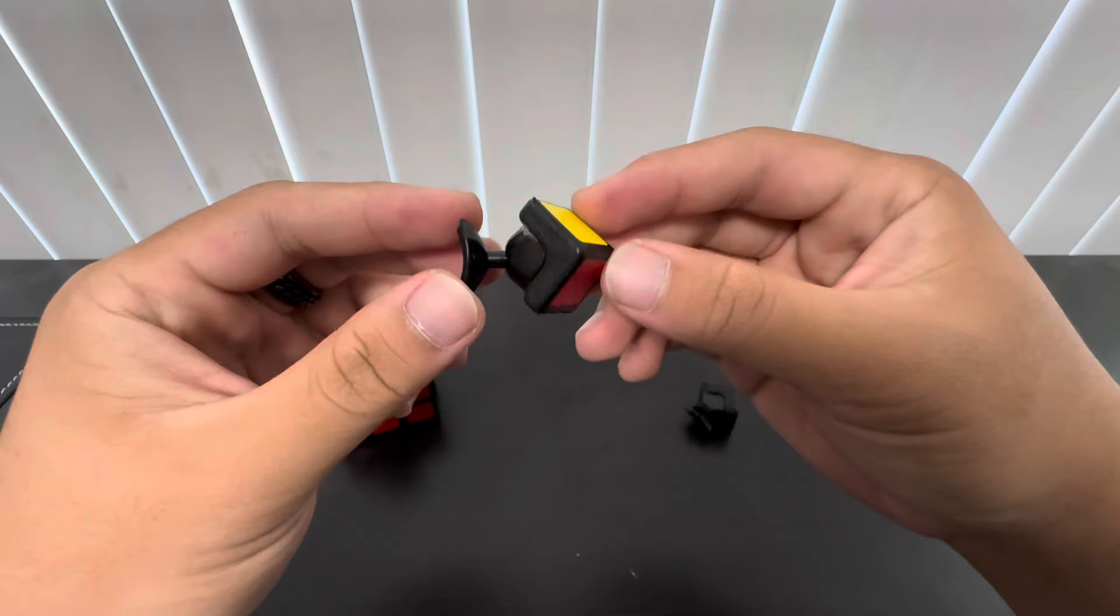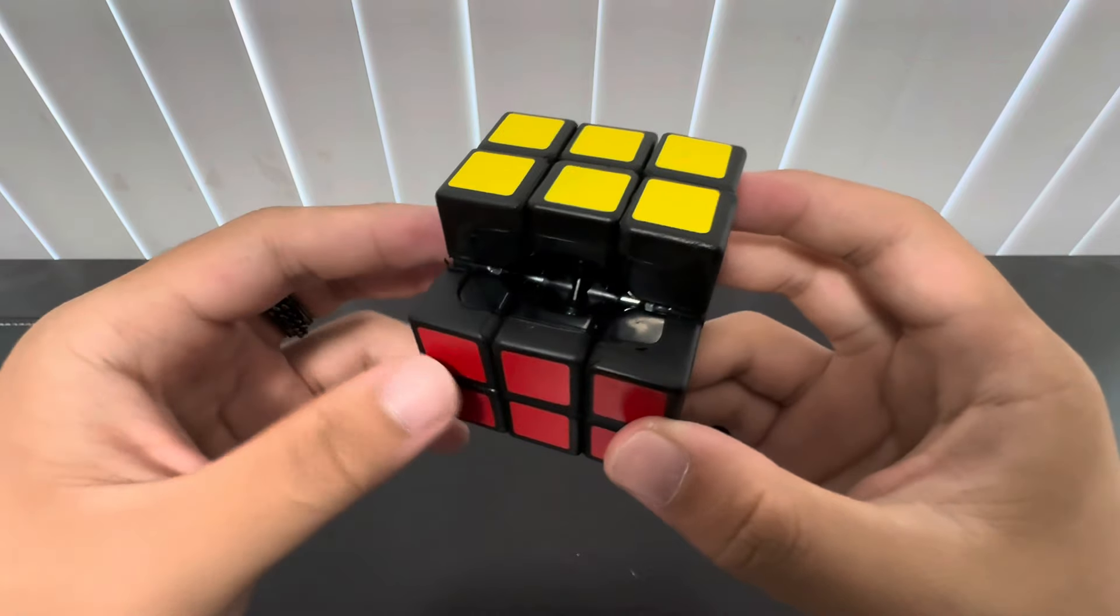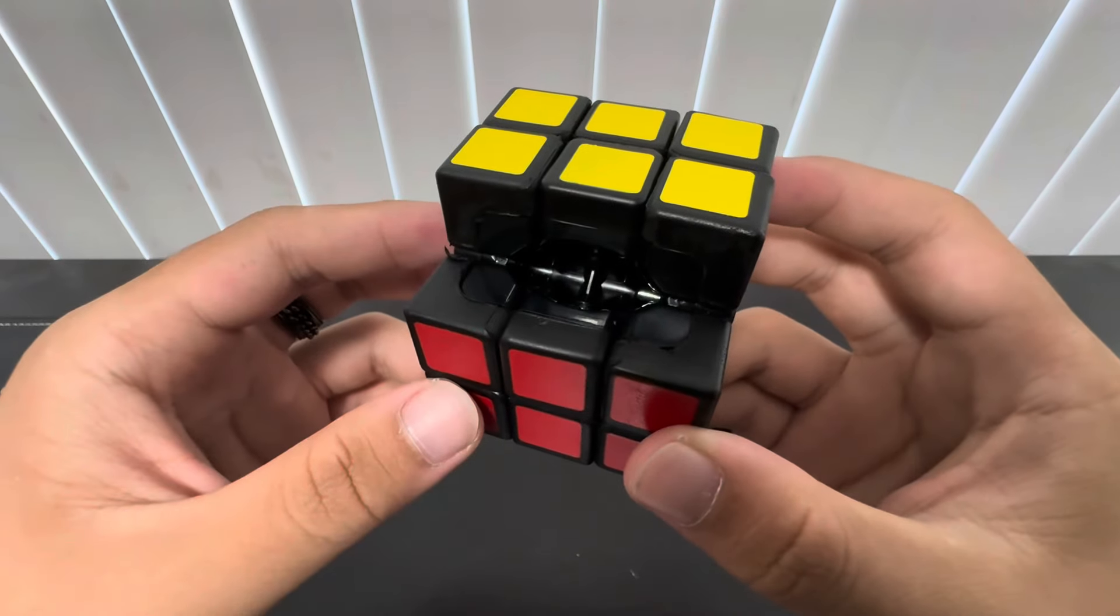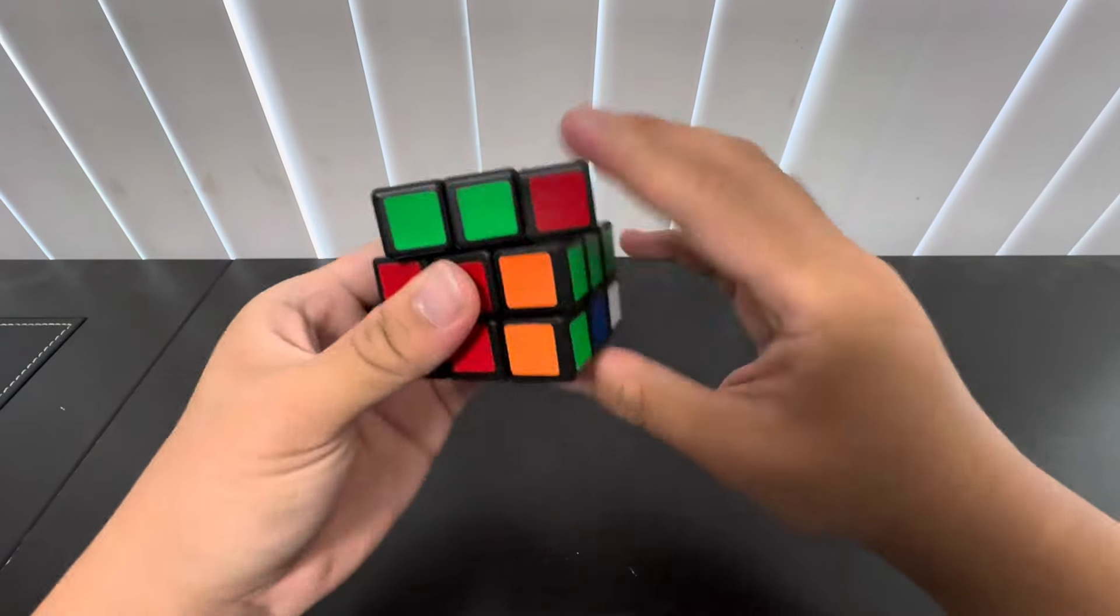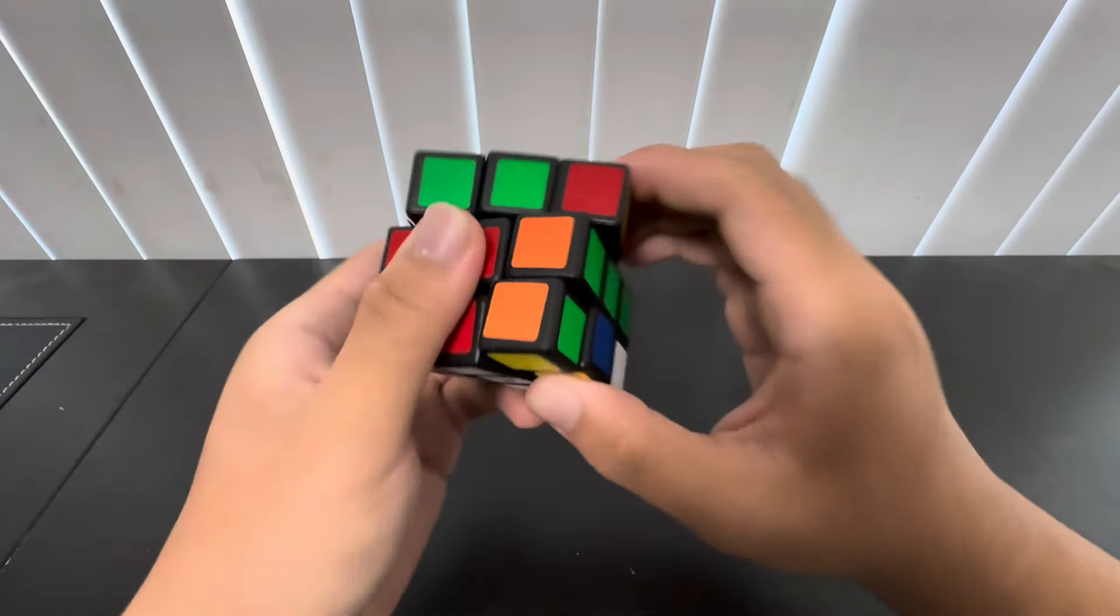Alright so this is what an edge looks like, here's a corner, and the internals inside function the same as the average Rubik's Cube. There's no way I can lubricate this without ruining the outside, and this cube does lock up, like pretty bad sometimes.